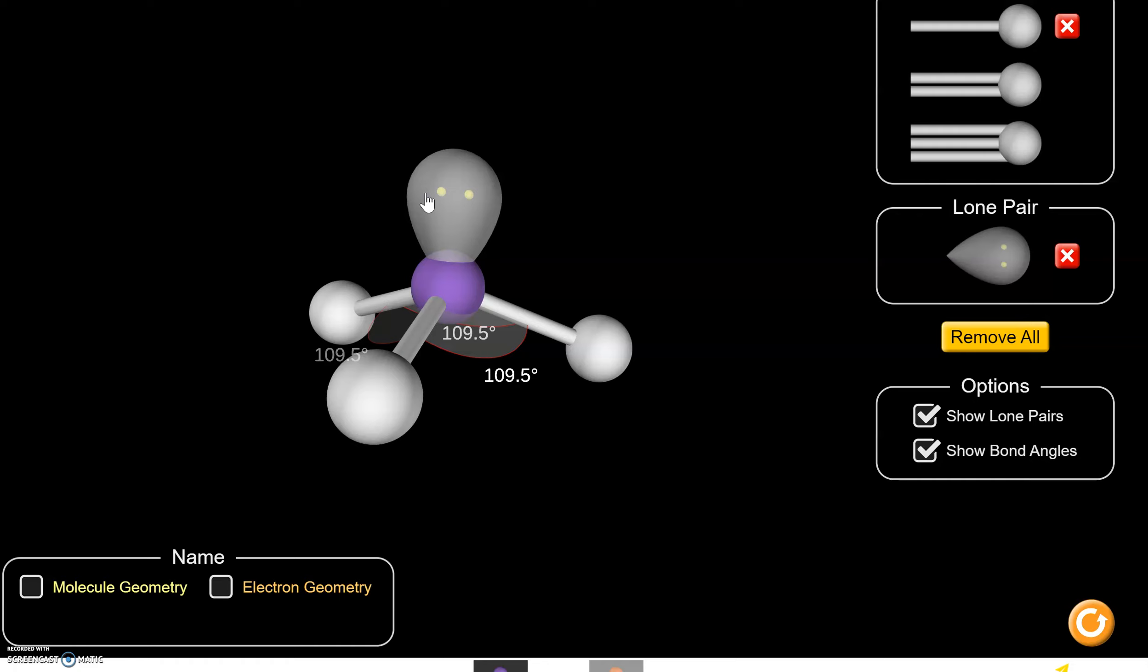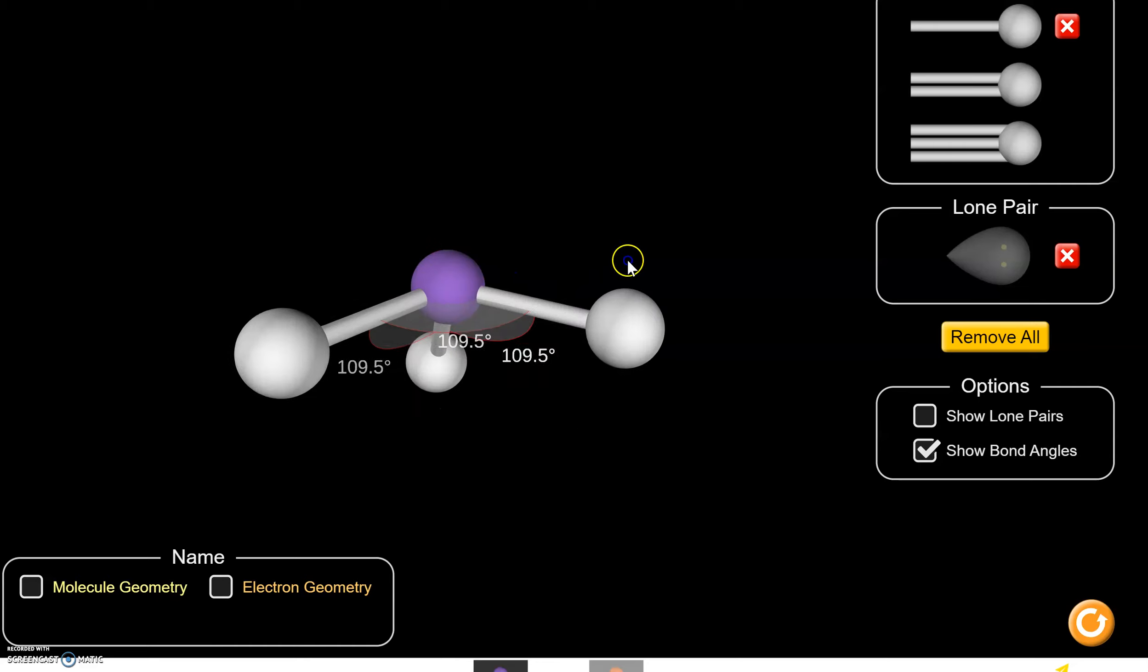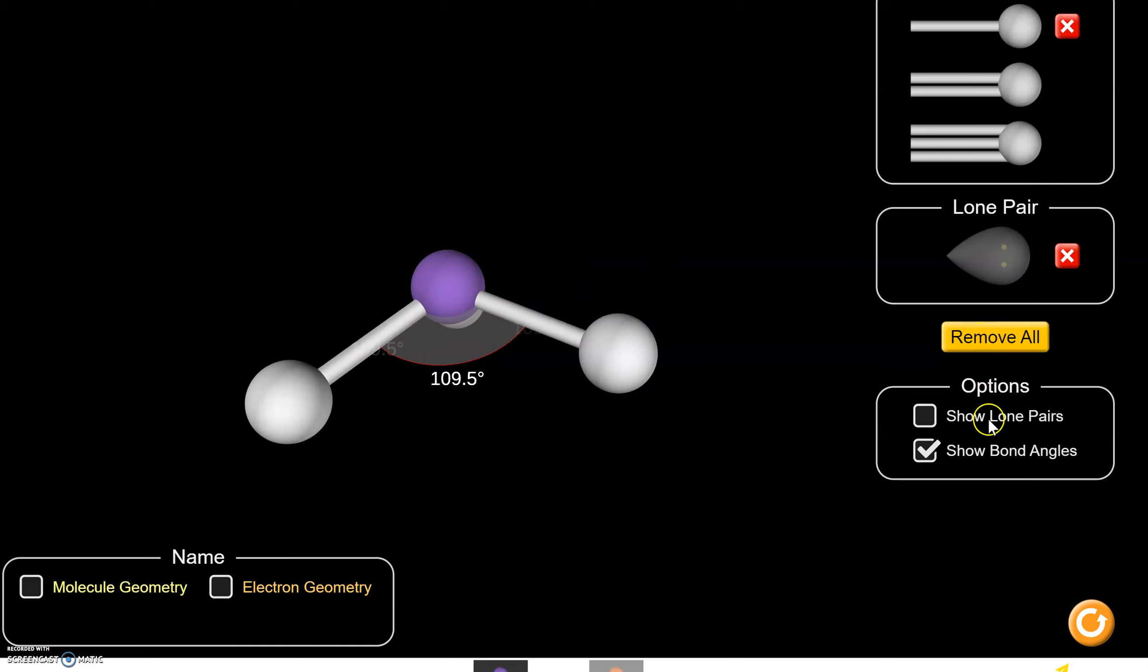Because vermicious knids act just like other bonded pairs. They're to be avoided. They repel. So every time we see a vermicious knid, we're going to treat it just like a bonded pair. However, it doesn't appear in the molecule, so we don't really see it when we draw it. That's why this is a tetrahedral molecule that's missing one bonded pair. So that's what this looks like.